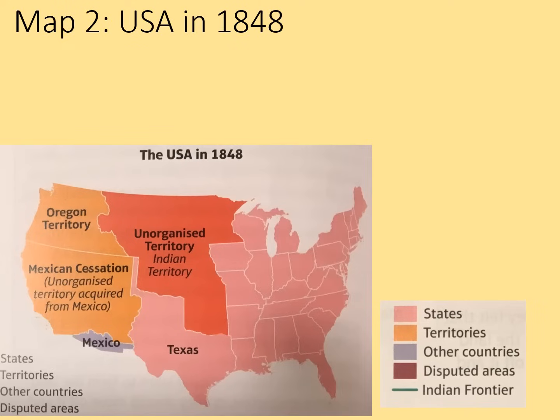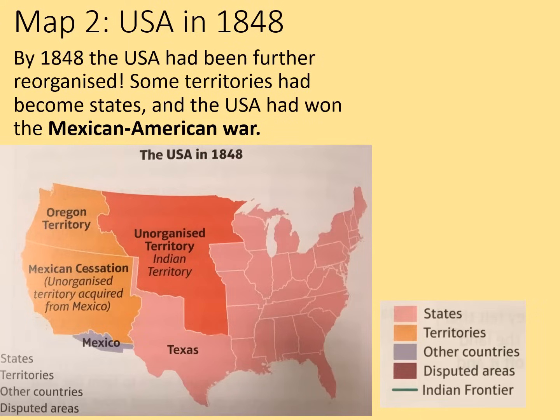Have a look at this map from 1848. Again, states are shown in pink. Indian territory is still shown in dark orange, and territories not yet organized are shown in orange out to the west. Mexico is still hanging on to a little bit of land down in the south. The Indian frontier is not marked on here because it has changed. By 1848, the USA had been further reorganized — some territories had become states, and the USA had won the Mexican-American War. You get a sense of just how enormous the Mexican cession was, with Texas taking over a significant proportion of that as well.